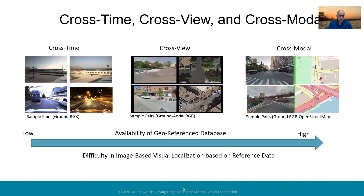In this tutorial, we are going to cover three sets of areas for solving this problem — three different ways, all based on the reference data. In the first set of talks, we'll talk about cross-time, where the query image and the reference data are all from the ground. They're all ground-level views, but the reference data may have been taken at different times of day, different seasons, or different weather conditions. That's the challenge with cross-time, but the key point is they're all taken from the same ground viewpoint.